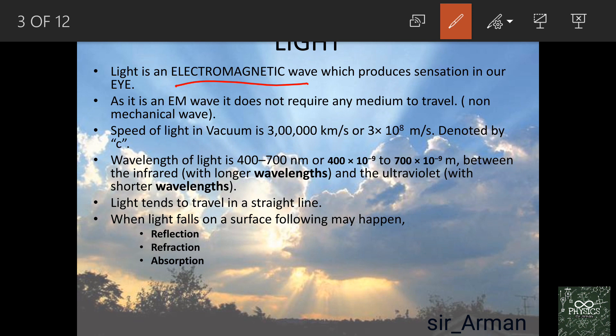Without light we cannot see anything around us. When light falls on our retina, we can observe and see the things around us. It means there is an electromagnetic wave which produces sensation in our eye.